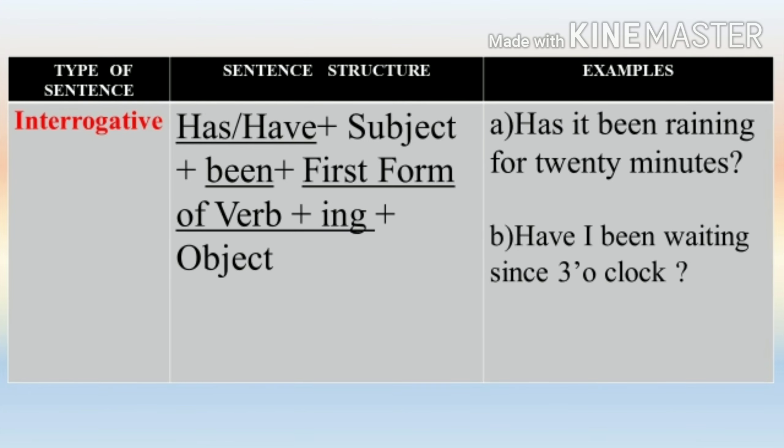Now let us learn what is the rule for writing an interrogative sentence. The rule is: has or have plus subject plus been plus first form of the verb plus -ing plus object. Jab bhi hamen kisi sentence ka interrogative banana hota hai, hum hamesha apne helping verb ko apne subject se pehle likh dete hain. For example: 'Has it been raining for 20 minutes?' 'Have I been waiting since 3 o'clock?'